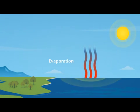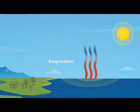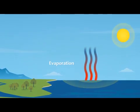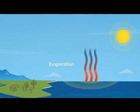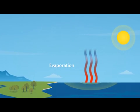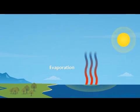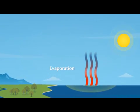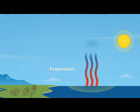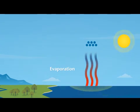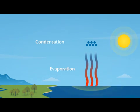Because gases are lighter than liquids, water vapor rises up into the sky, and the further you move up and away from the Earth's surface, the colder the temperature gets. So in the sky, the water vapor cools and changes back into tiny water droplets. This change is called condensation and is the opposite of evaporation.